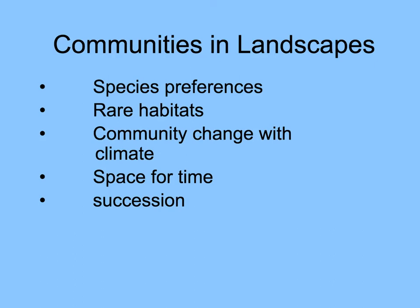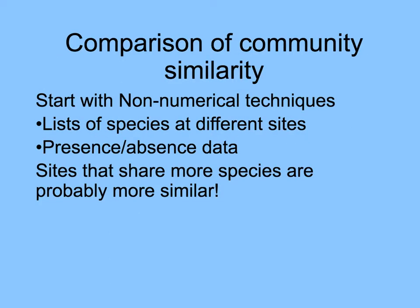Let's look at some issues about communities in landscapes, including preferences of species for one place or another, habitats themselves that are rare, how communities change when climate changes, and space for time succession, which happens in some places. How can we compare communities and how similar they are?